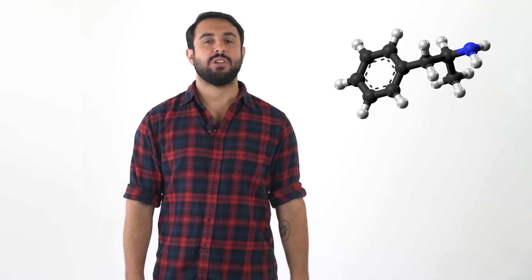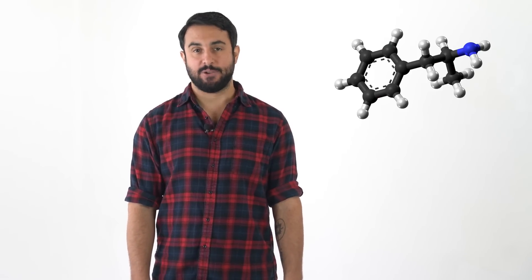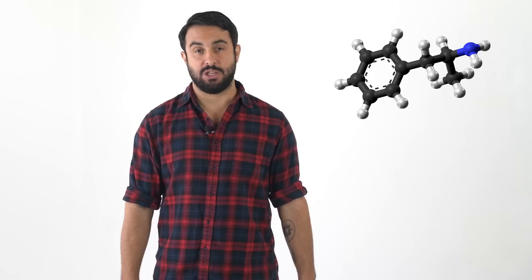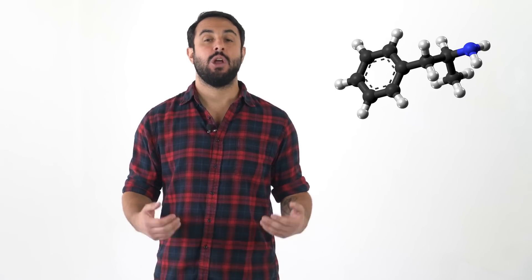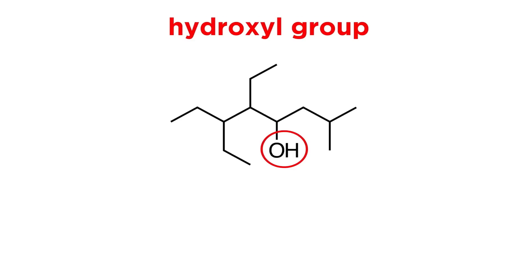Professor Dave and Chegg here. With a lot of basics covered, we are now ready to start looking at all kinds of different organic molecules. In doing so, we will see the same groups of atoms and bonding patterns over and over again. These are called functional groups, and it will be important to be able to recognize these, so let's go through the different functional groups now.